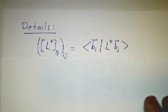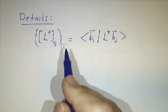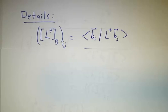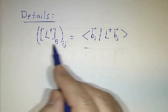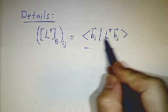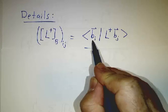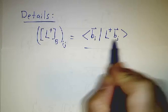If you want to figure out the matrix of the adjoint, the ij entry of the adjoint, we've seen how to figure out the ij entry of any operator with respect to an orthonormal basis. You compute the matrix elements. You apply the operator to b_j, and you take the inner product of b_i with that. That will always give you the ij entry.